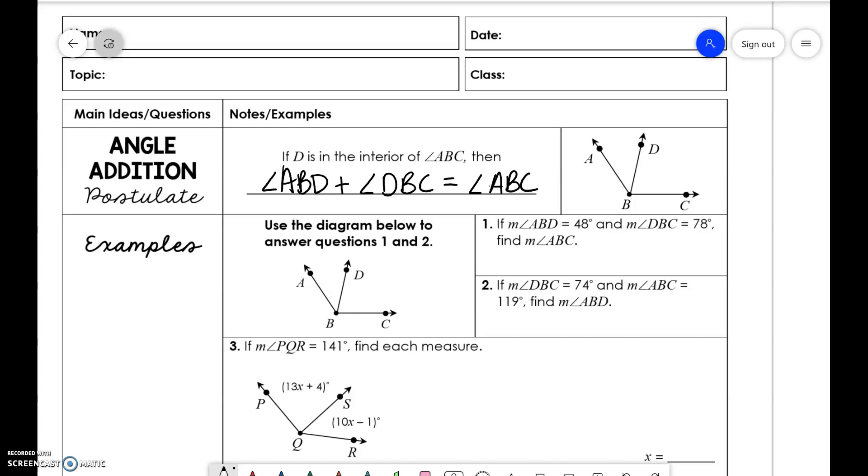So now we're just applying it to angles. So for number one, ABD is 48, DBC is 78. So 48 plus 78 is equal to 126.